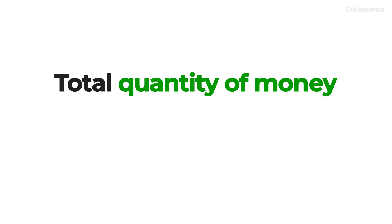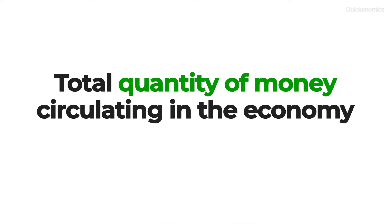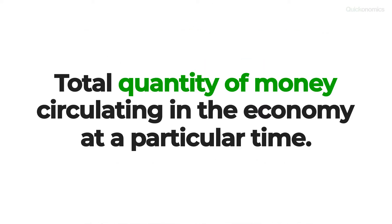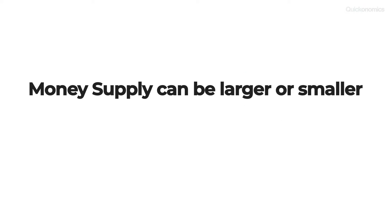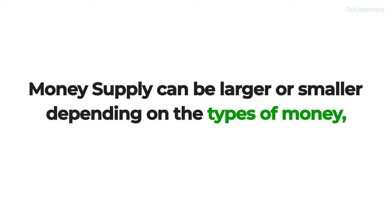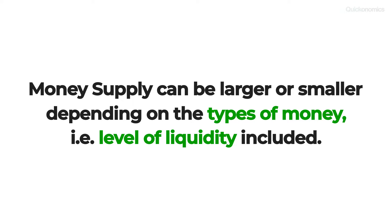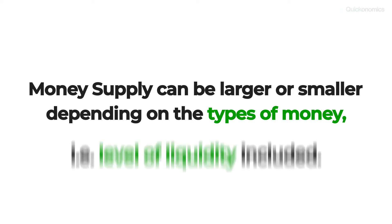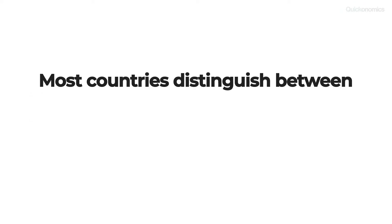The money supply is defined as the total quantity of money circulating in the economy at a particular time. It can be larger or smaller, depending on the types of money that are included, based on their level of liquidity in the economy. Starting from there, most countries distinguish between at least three common measures of money supply.